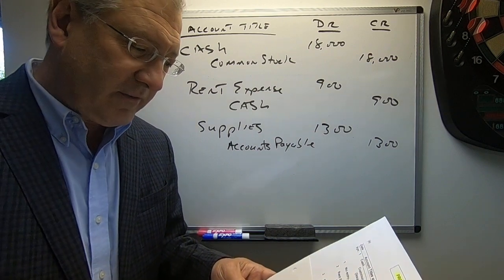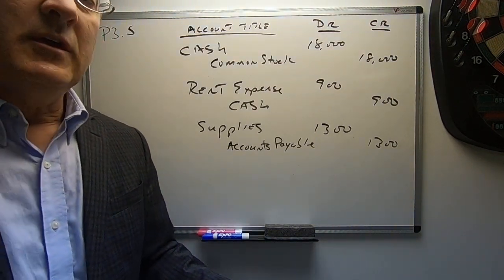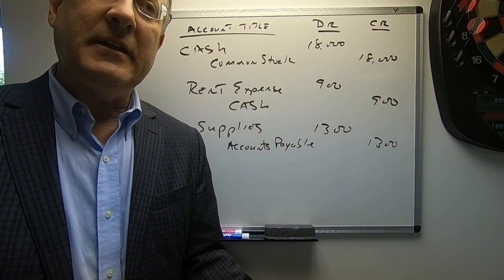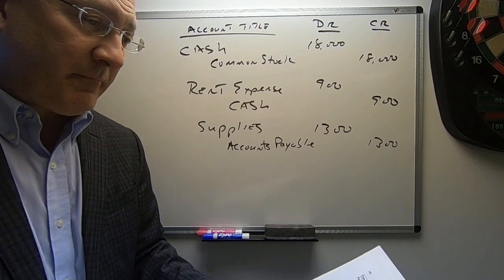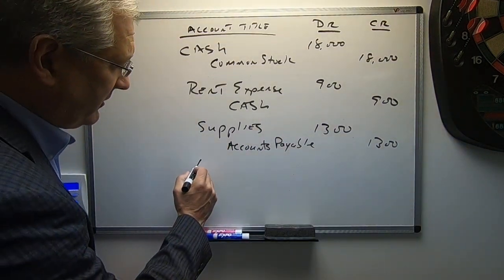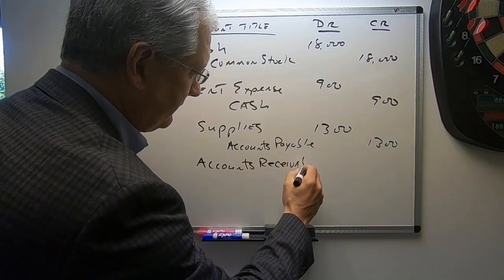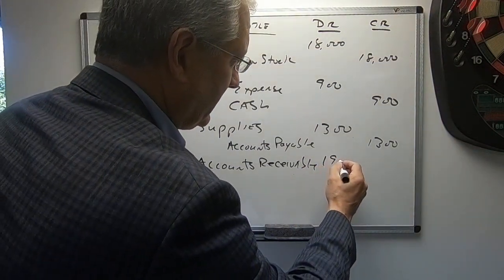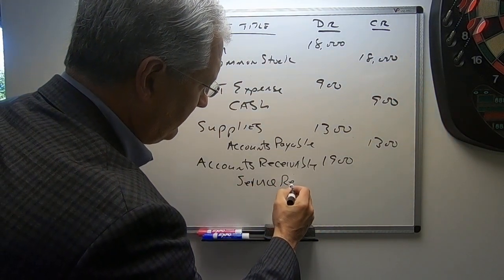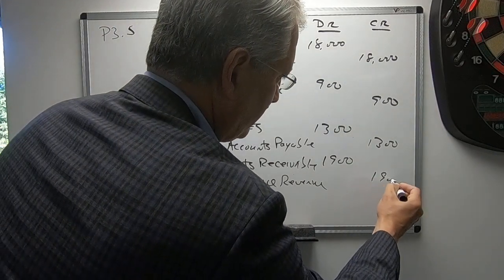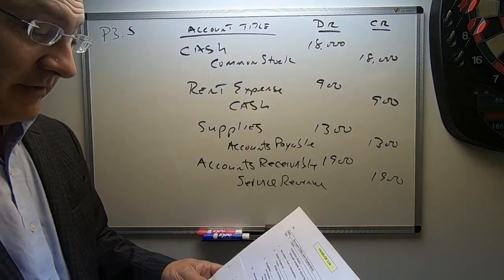Next transaction: completed blueprints on a carport and billed the client $1,900 for services. They earned some revenue, and they didn't get paid in cash, but they have a receivable — the client is going to pay them. So accounts receivable went up. We're going to debit accounts receivable as an asset for $1,900 and credit service revenue for $1,900.